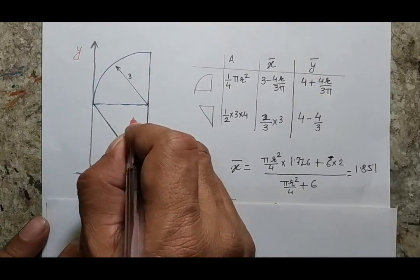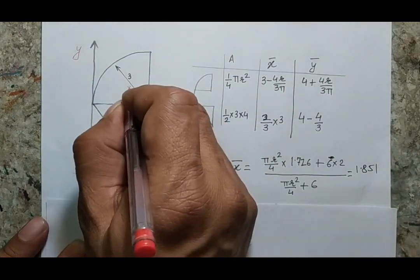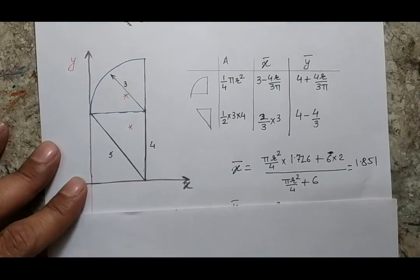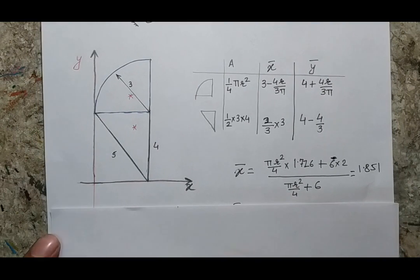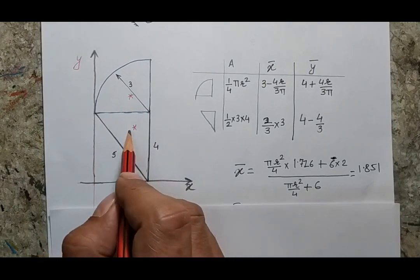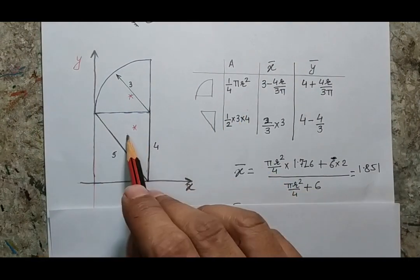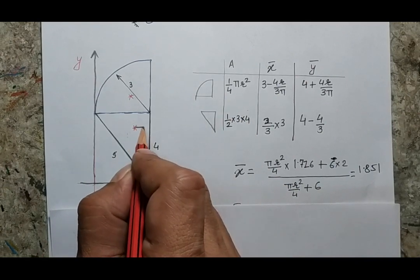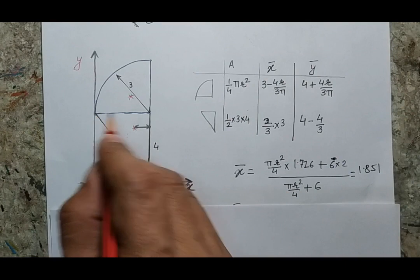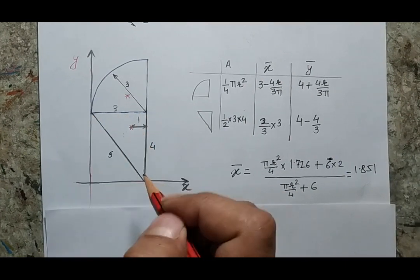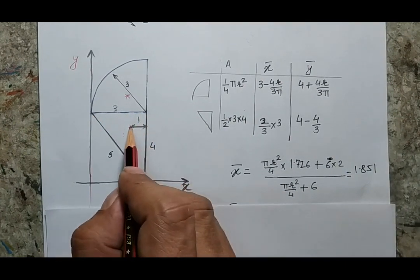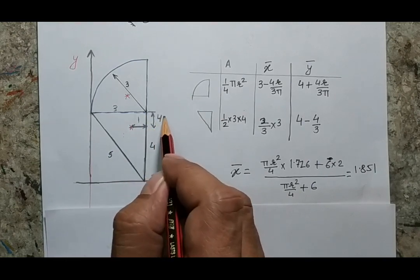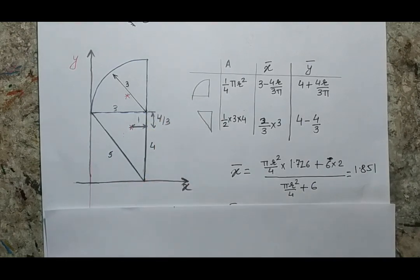Now I will mark the individual centroids, which will help me fill in the table and reduce errors. For the triangle, I know that the position of the centroid from one side is one third of that side — 3 divided by 3 equals 1. Similarly, the position of the centroid from the other side will be 4 by 3.